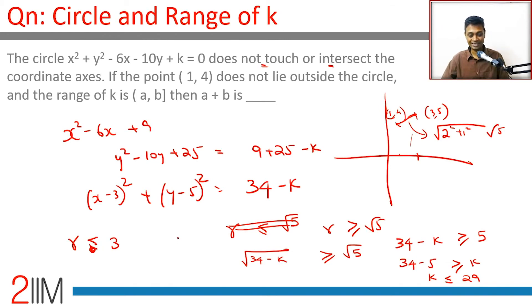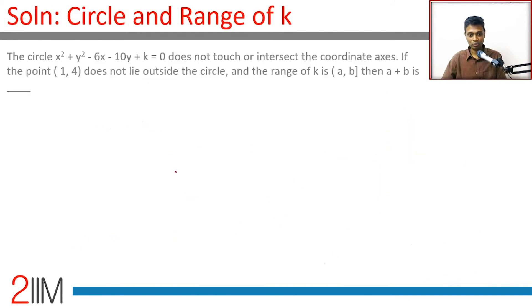If it is equal to 3, then the y-axis would be a tangent. Radius is less than 3, or √(34 - k) is less than 3. 34 - k is less than 9. k is greater than 25.